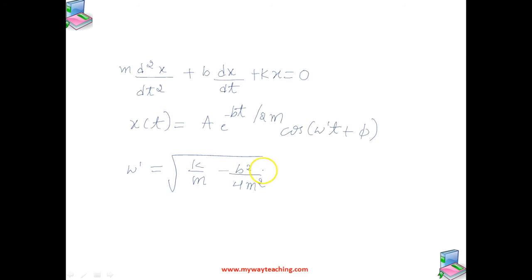The cosine function has a period 2 pi by W dash, but the function X of T is not strictly periodic because of this exponential factor e raised to minus BT by 2M. Because of this exponential factor, X of T is not periodic, as this exponential function decreases continuously with time. If the decrease is small in one time period T, the motion represented by the X of T equation is approximately periodic.